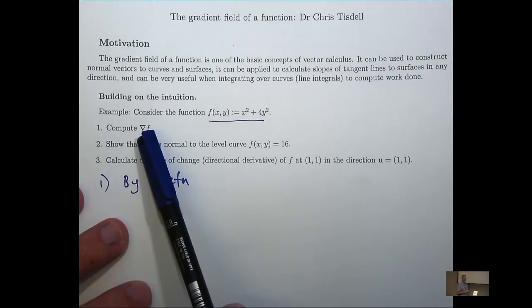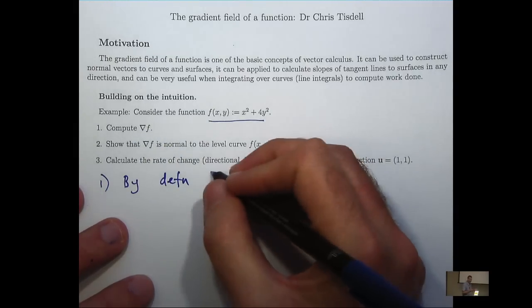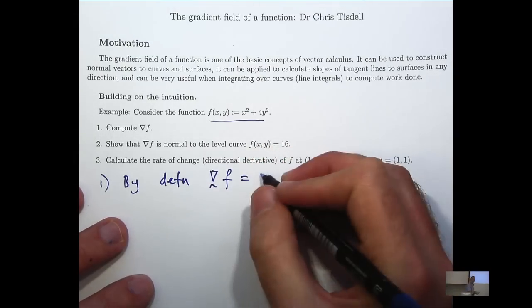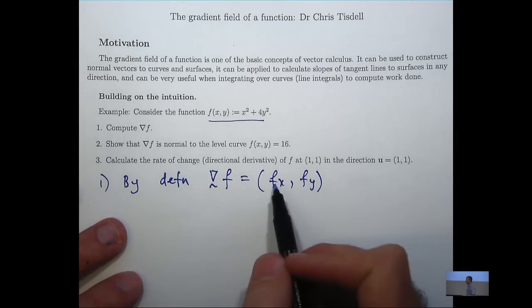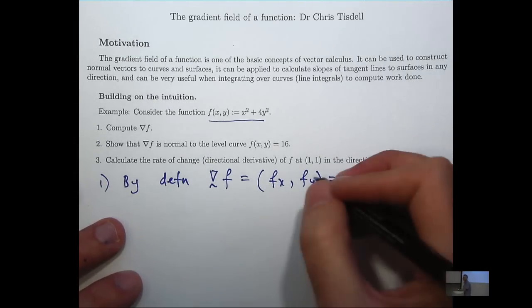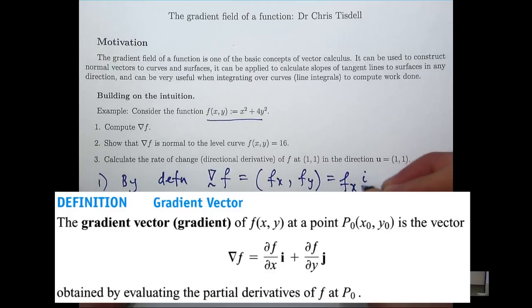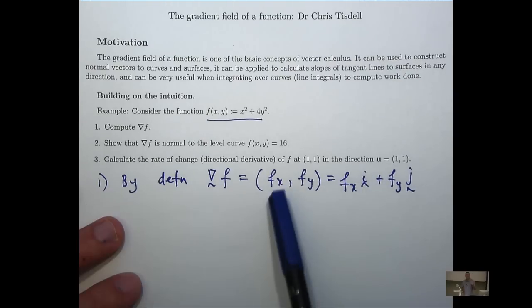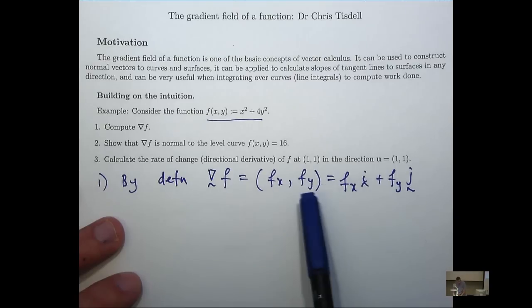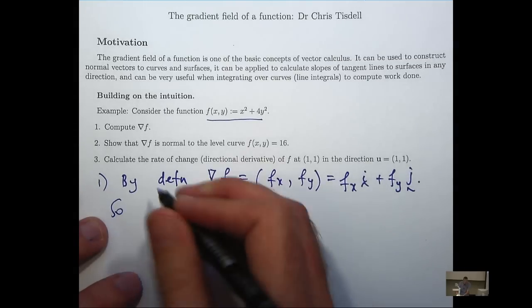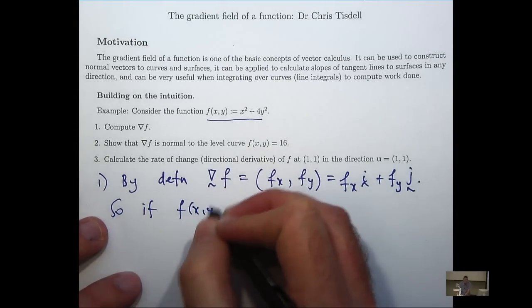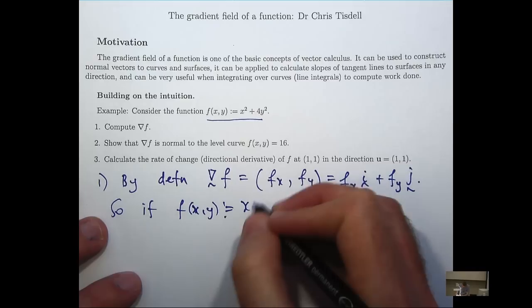How do we compute the gradient of f? Well, it's just a vector involving the partial derivatives of f as the components. So if you wanted to write this in ij notation, this is what you would have. By the subscripts, here I mean df/dx, here I mean df/dy. So for our function, which is defined by this, then the gradient is just...